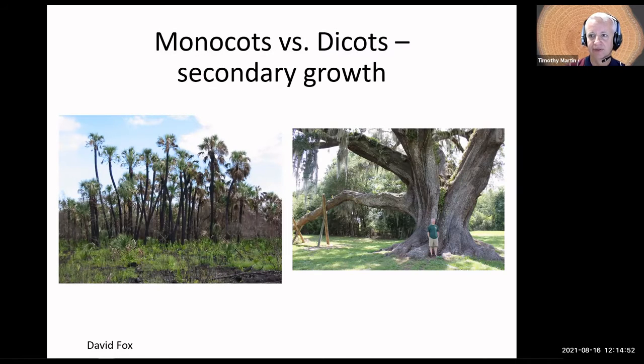Secondary growth is another example. Monocots do not have significant secondary growth. This is an example of palms. Palms are the only monocot tree. Palms do not have secondary growth. You look at a really short palm and look at the width of its stem. And then if you came back 100 years later, when it was really tall, its stem would be the same width. Whereas dicots can have significant secondary growth. Monocots don't.